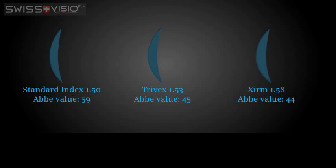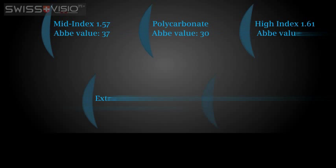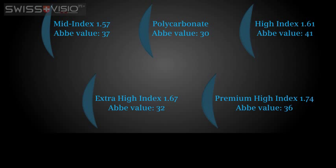In an ideal world, the Abbe value of a lens should not be lower than that of the eye. In practice, only three lens materials have Abbe values close to that of the eye. All remaining lens materials have lower Abbe values.